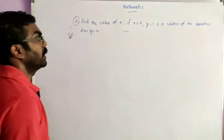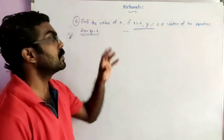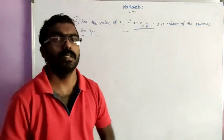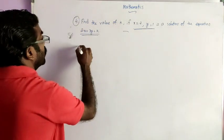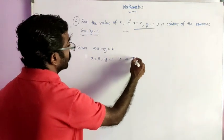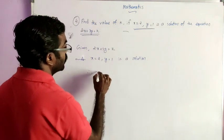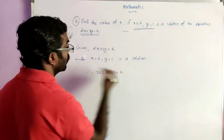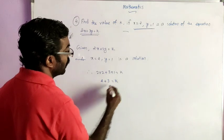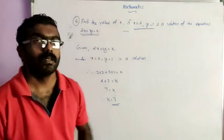Question 4: Find the value of k if x equal to 2, y equal to 1 is a solution of the equation 2x plus 3y equal to k. Since x equals 2 and y equals 1 is a solution, substituting into the equation gives 2 times 2 plus 3 times 1 equals k. That is 4 plus 3 equals k, so k equals 7. Therefore the value of k is 7. That's all for today, thank you.